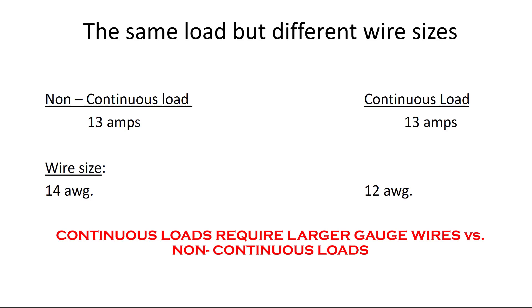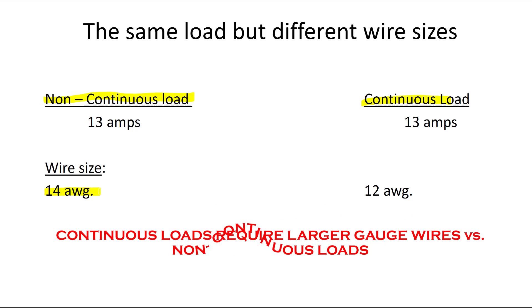If we have two loads — one continuous and one non-continuous — but they operate at the same value of current, the wire sizes will be different for the two loads. A non-continuous load operating at 13 amps only requires a wire size of 14 gauge, but a continuous load of 13 amps requires a 12 gauge wire.